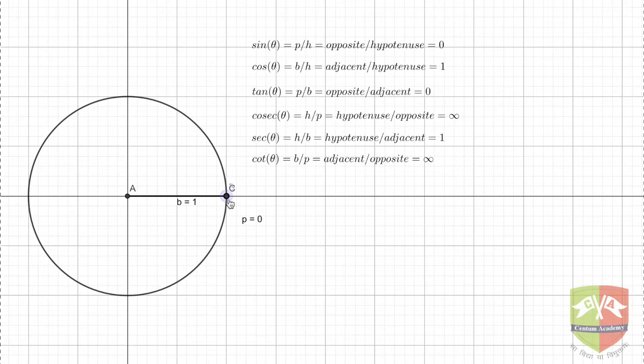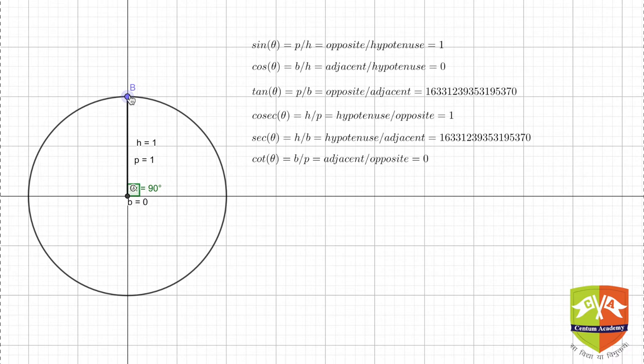Now if you see, I will move this point B back towards y-axis. Now alpha value or theta value in this case is changing, and now the base is getting reduced and the perpendicular is constantly getting increased. Now as I merge this point B on the y-axis.